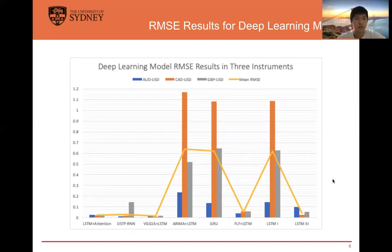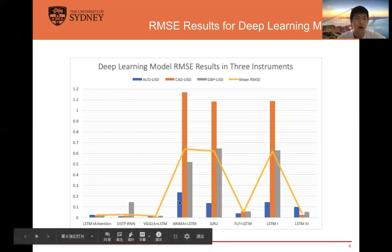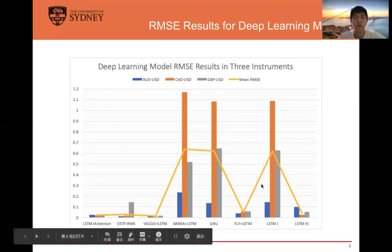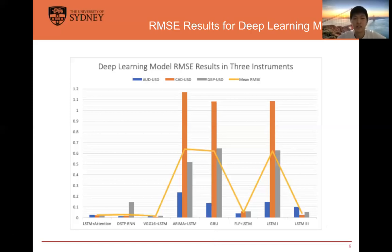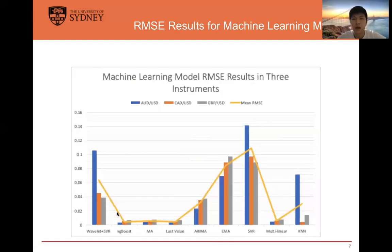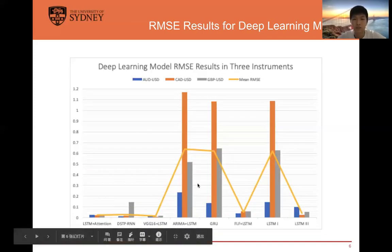Here are the RMSE results for deep learning models. The blue, orange, and gray colors represent three different currency pairs, and the yellow line represents the mean RMSE. The LSTM-based model showed poor performance on CAD/USD and GBP/USD, but the attention-based model improved the performance of LSTM on those datasets. The CNN plus LSTM model had the best performance, likely because of the diversity of features.